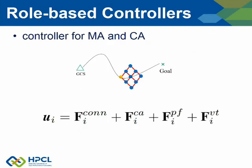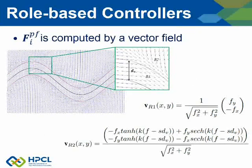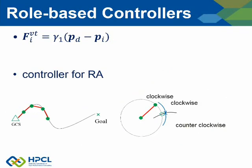In our proposed role-based approach, different controllers are devised for different roles. For MA and CA, the control input is a combination of four forces: for connectivity, collision avoidance, path-following, and velocity-tracking respectively. Forces for connectivity and collision avoidance are computed by artificial potential fields. The former generates a large attractive force if two agents are moving away from each other, while the latter makes a repulsion if they are too close. The path-following force is computed by a constructed vector field, and it can drive the agent to move along an arbitrary twice-differentiable curve. The velocity-tracking force is proportional to the difference between current velocity and desired velocity, making smooth and steady motion of agents.